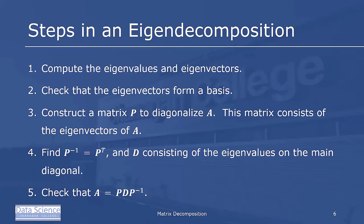We then construct a matrix P to diagonalize A. This matrix consists of the eigenvectors of A as columns of P. This then allows us to find P inverse, which happens to be P transpose, and D of the eigenvalues on the main diagonal. And so we check that A is equal to P D P inverse, and we're done.